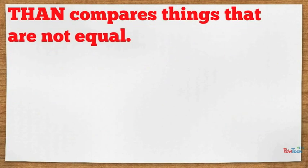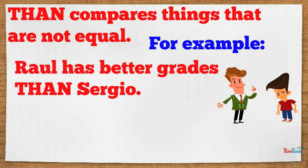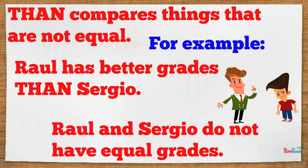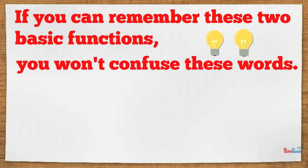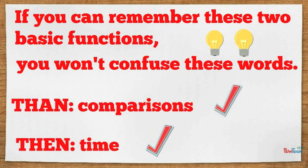Than compares things that are not equal. For example, Raul has better grades than Sergio. Raul and Sergio do not have equal grades. If you can remember these two basic functions, you won't confuse these words. Than: comparisons. Then: time.